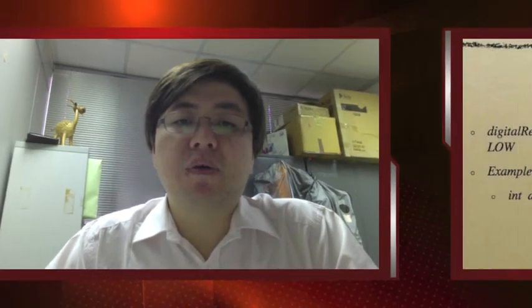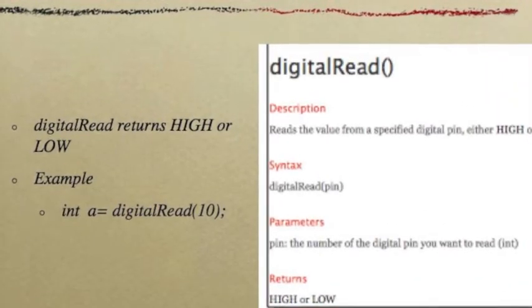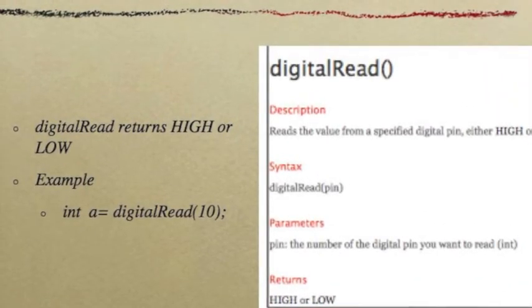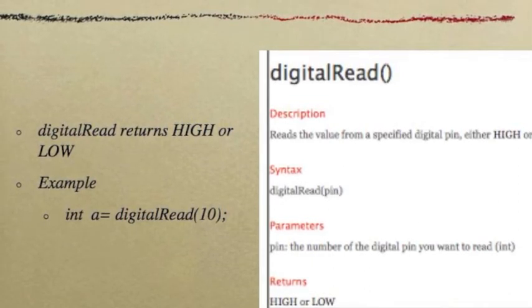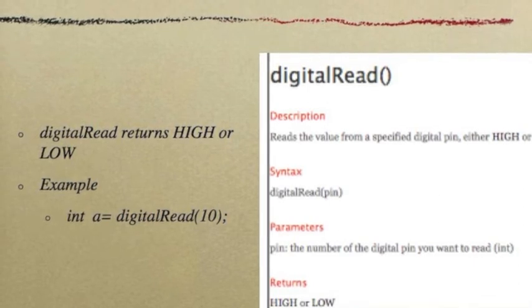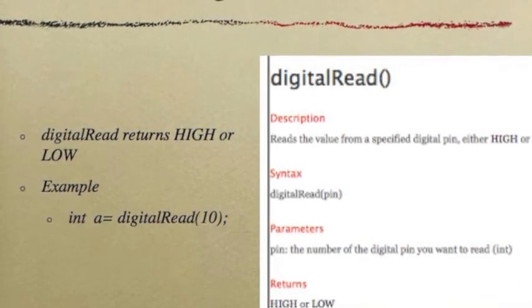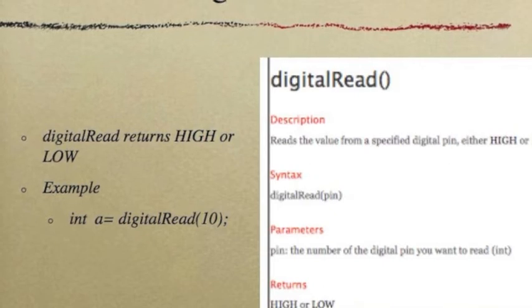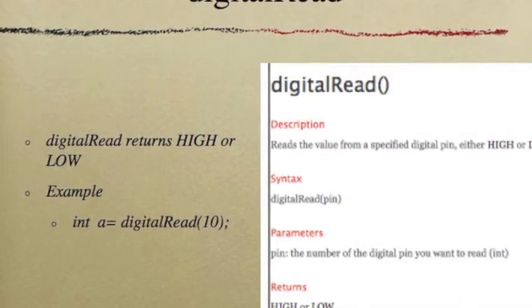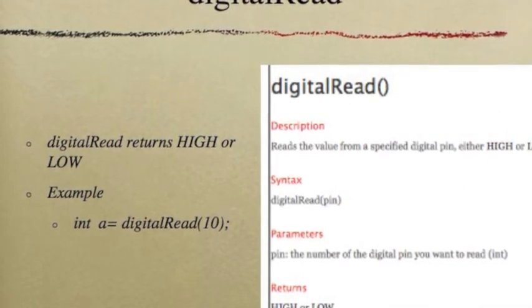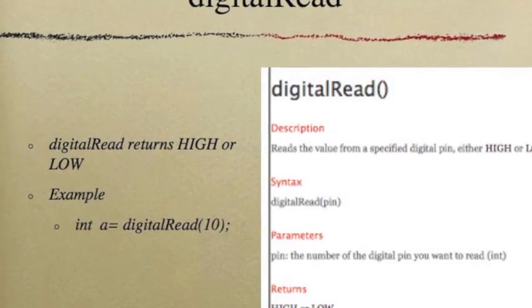In today's lab, you have to do a bunch of input reading. So, I introduce you the digital read function. Well, if you take a look at the description of the digital read function, you would see that the digital read function returns two values, either high or low. So, if you want to hold the value, you need a variable to hold the value. For example, you might have to first declare an integer a, and a equals to digital read 10 will remember the value of digital read number 10.